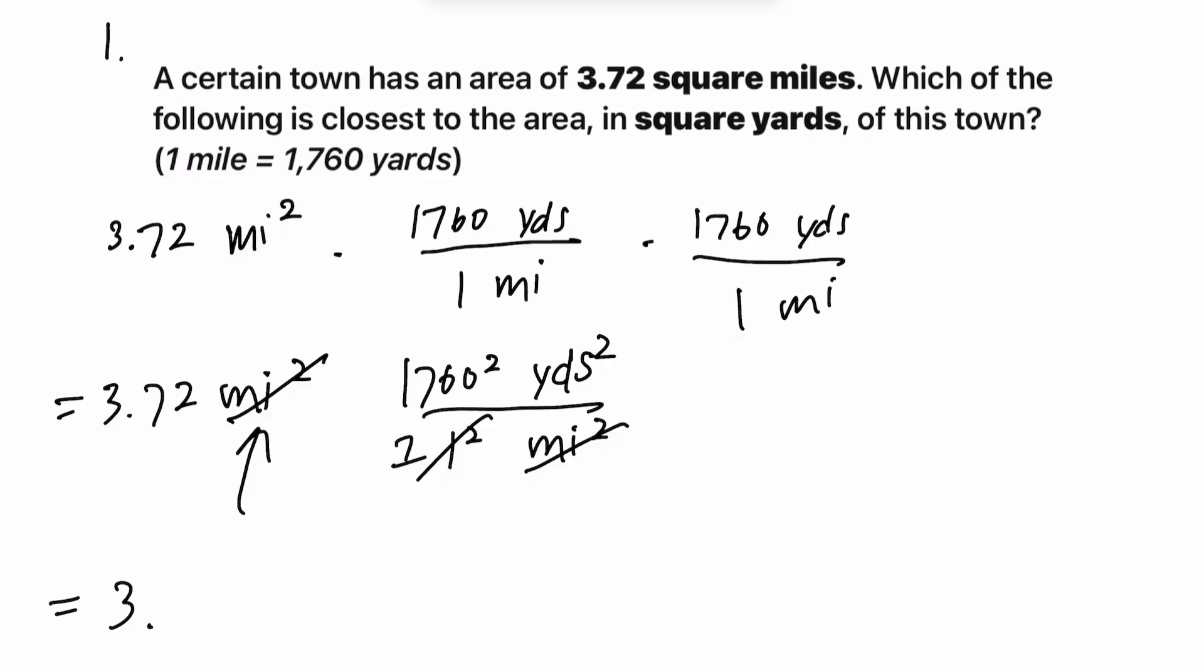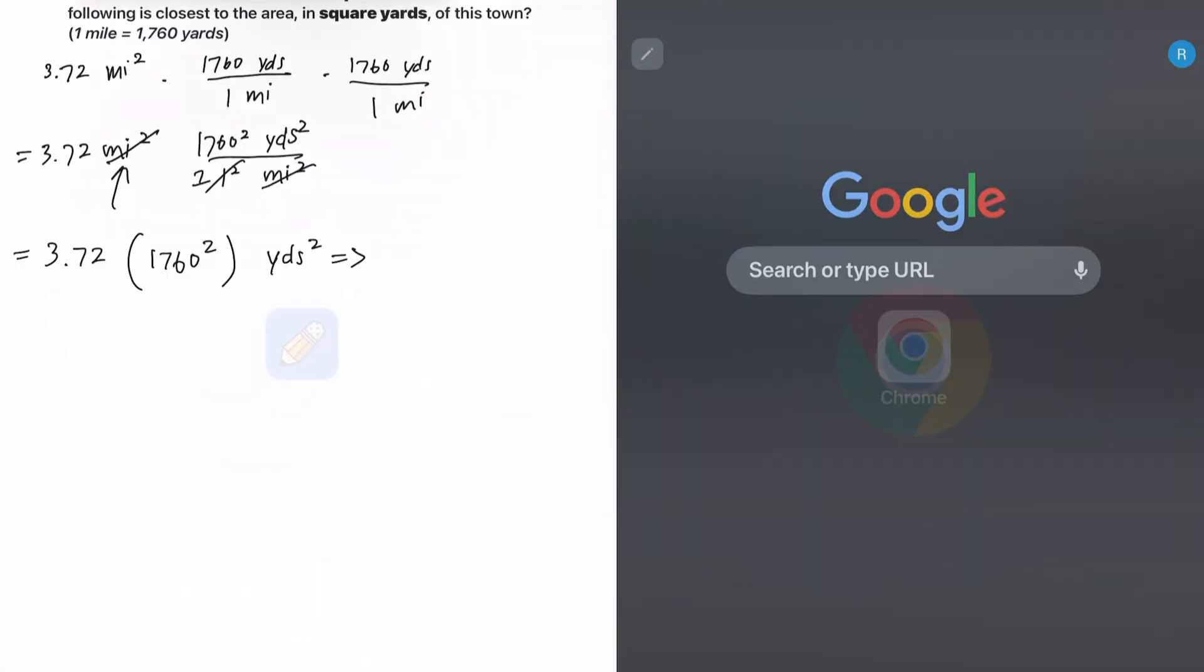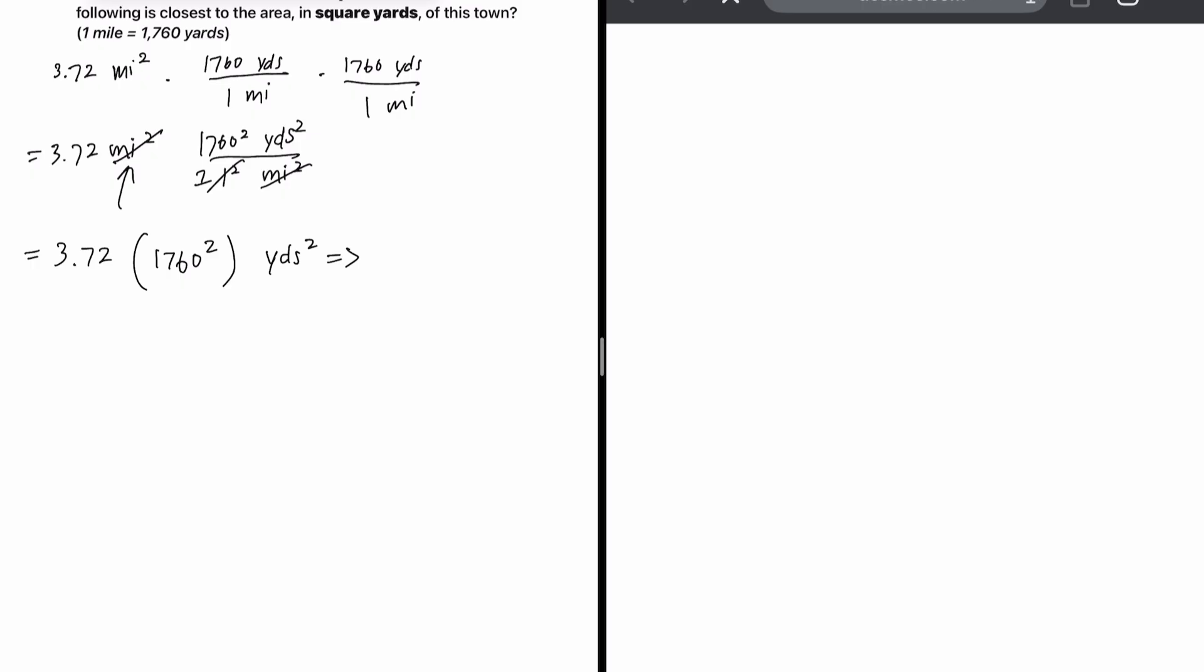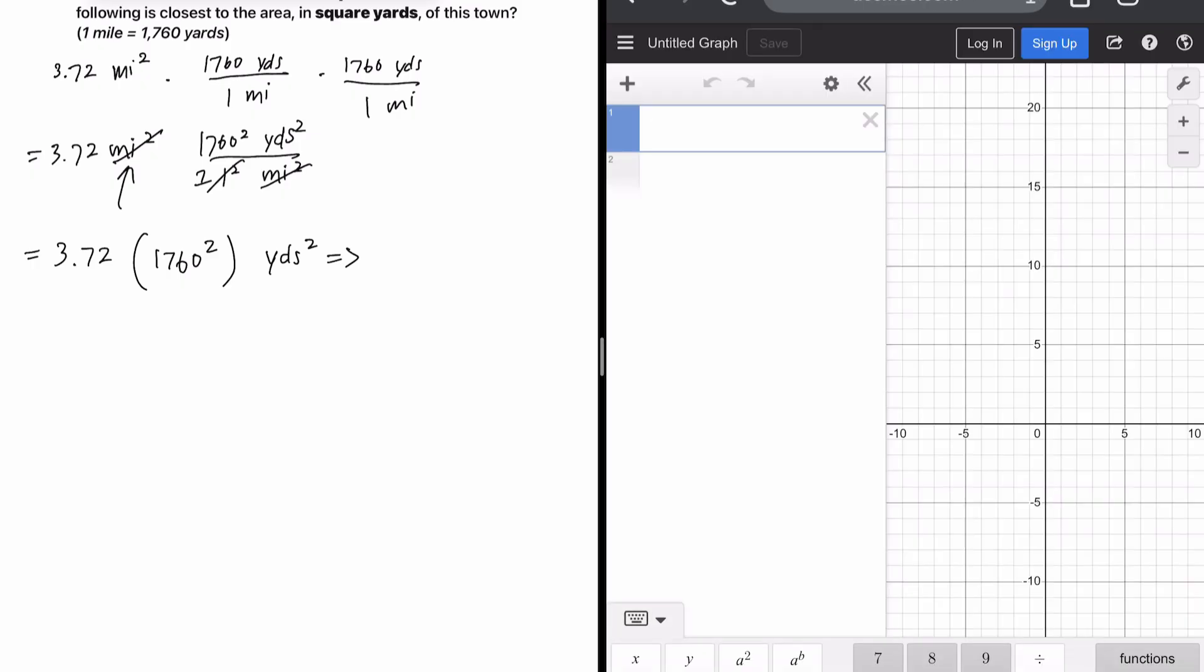What we're going to be left with is 3.72 times 1760 squared yards squared. Which then we can go into Desmos, Desmos.com slash calculator. This is the calculator that you get on the SAT. So use it.